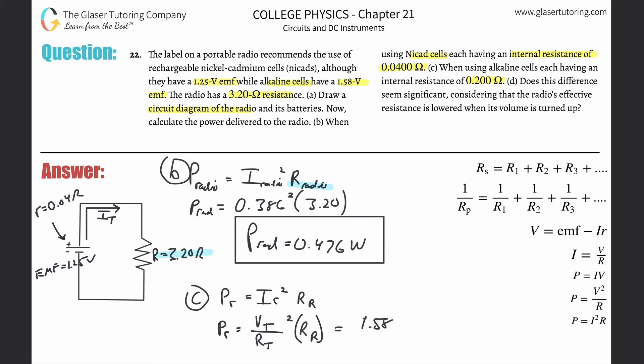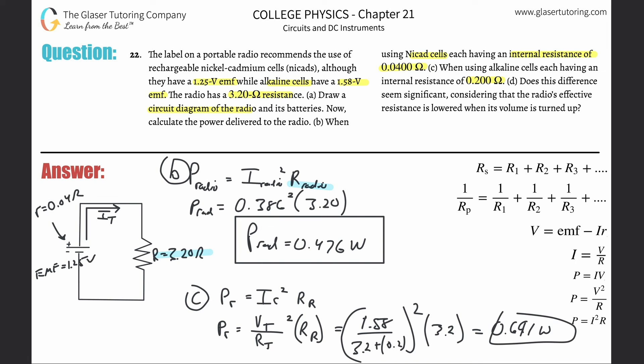The alkaline battery supplies a total EMF of 1.58 volts, divided by the total resistance of 3.2 plus 0.2 ohms internal resistance. Square that value, then multiply by the radio's resistance of 3.2 ohms. So: 1.58 divided by (3.2 + 0.2), squared, times 3.2 — giving a power of 0.691 watts. That takes care of part C.